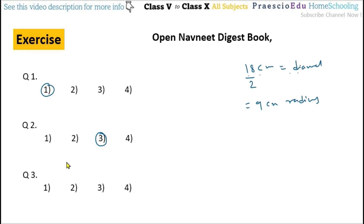Question number three: write the name of the longest chord of the circle. The longest chord means diameter. Here the diameter is segment PT — or we can also say segment TP. So that is given in option number three.